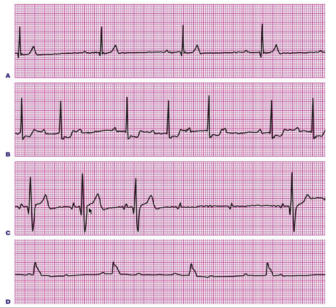In Mobitz Type 2, the PR interval is constant. You can see the PR interval is constant here, but there is a P wave with no following QRS complex. Remember that in Mobitz Type 2, P waves are blocked before they reach the ventricles, and the PR interval remains constant — whereas in Type 1 it is progressively getting prolonged. That is very important to remember.